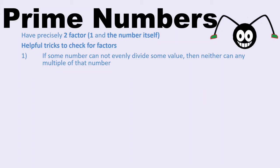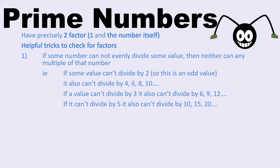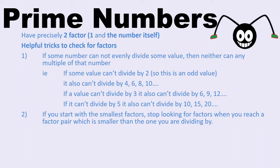The first trick is that if a number can't divide by some value, then it can't divide by any multiple of that value either. For example, if a number can't divide by 2 — so an odd number — it also can't divide by any other even number: it can't divide by 4, 6, 8, 10, and so on. Similarly, if a number can't divide by 3, that means it also couldn't divide by 6, 9, and 12. And if it can't divide by 5, that means it couldn't divide by 10, 15, or 20 either. The second trick is that if you start with the smallest factors and find the biggest factor pairs, you can stop looking when you've reached a pair which is smaller than the number you've just divided by. You're going to want to write these tricks down because once you understand them, you'll find them very helpful.